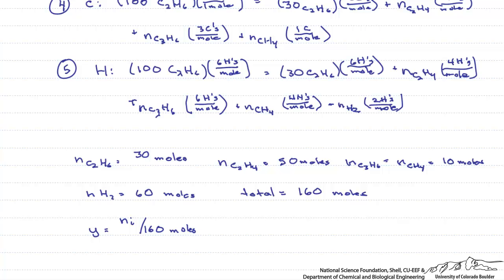For example, if we want to look at the mole fraction of the ethane in the product gas, that would be 30 divided by 160, which equals 0.18.